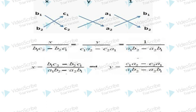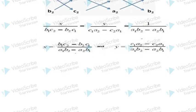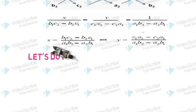x/(b1c2 - b2c1) = y/(c1a2 - c2a1) = 1/(a1b2 - a2b1). Let's solve a few questions based on it.